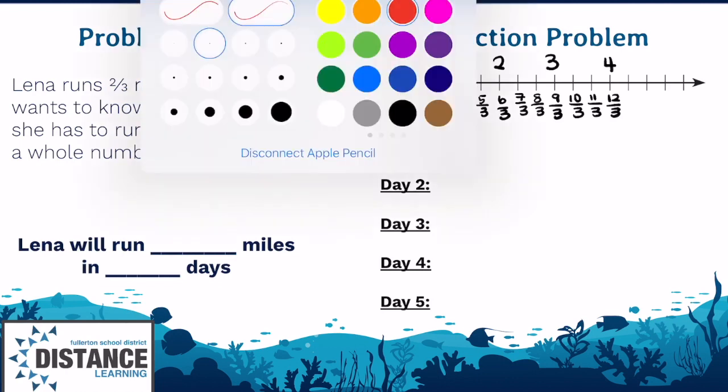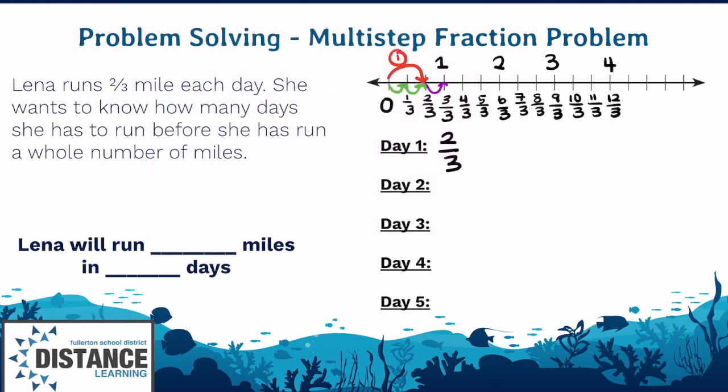So day two, she'll take another two steps. One, two, and we're at four-thirds. Since four-third is not a whole number, we need to keep going. Day two, we're at four-thirds. And also remember, two-third plus two-thirds, if you do it mathematically, we add two plus two, which is four-thirds. And we know four-thirds is not a whole number. So let's keep going.